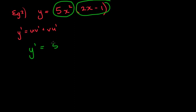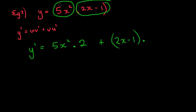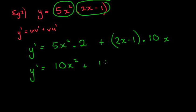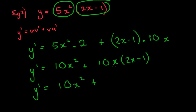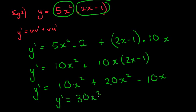So y' equals u, which is 5x², times v', so we're going to differentiate (2x − 1), which equals 2. Plus v, which is (2x − 1), times u', so differentiate 5x²: 2 times 5 is 10x to the power of 1. So y' equals 2 times 5x² which is 10x², plus 10x(2x − 1). Expanding: 10x times 2x is 20x², minus 10x times 1 is 10x. Simplifying: 10x² + 20x² is 30x² minus 10x.